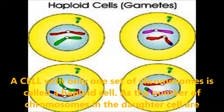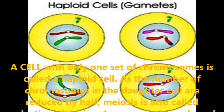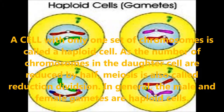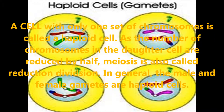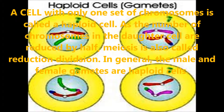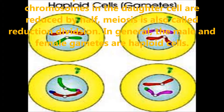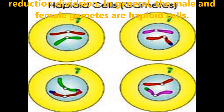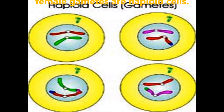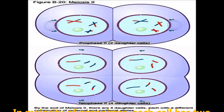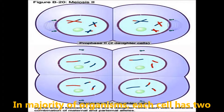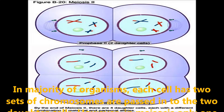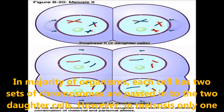A cell with only one set of chromosomes is called a haploid cell. As the number of chromosomes in the daughter cell are reduced by half, meiosis is also called reduction division. Generally, the male and female gametes are haploid cells.